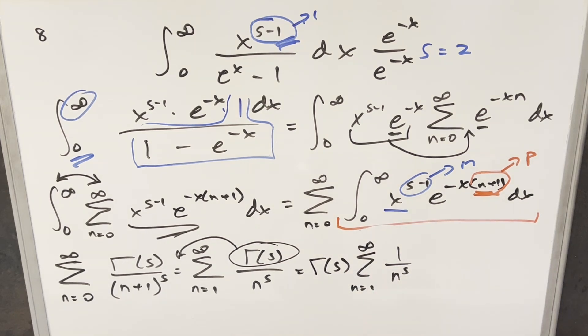But then here, I can't really simplify this any further. But what we'll notice is this right here, this is exactly our definition for the Riemann zeta function. So what I can do just to rewrite my final solution, I can write this as gamma of s times the Riemann zeta function of s. And that's it.